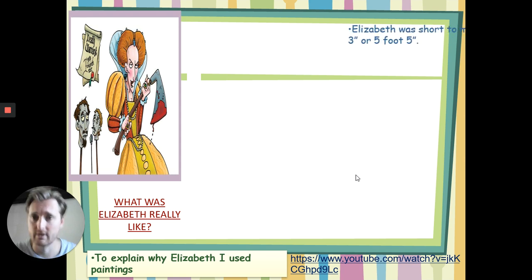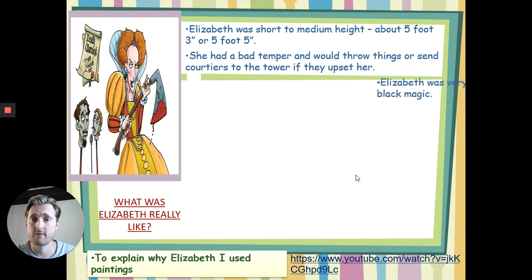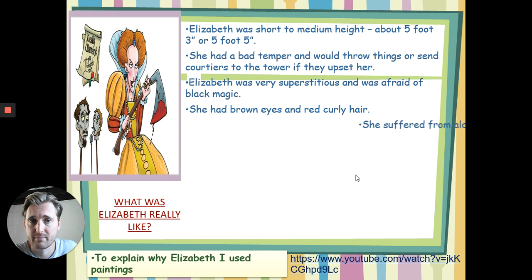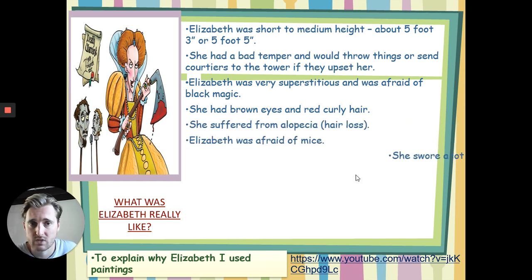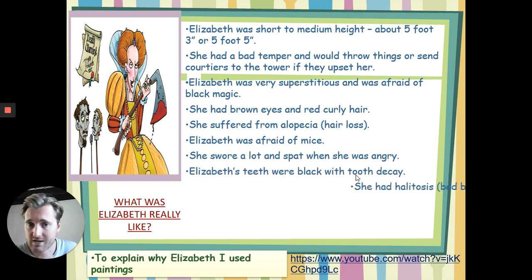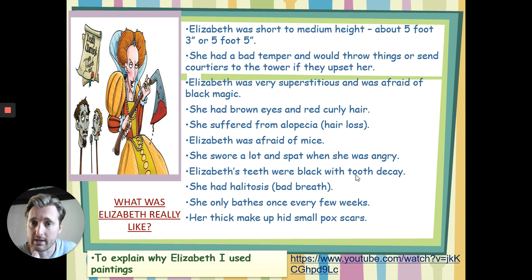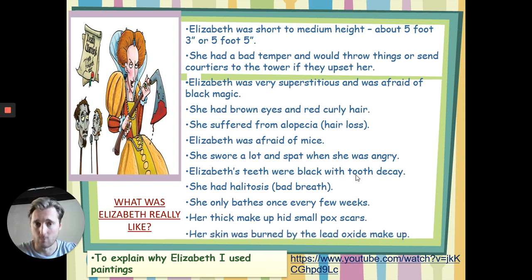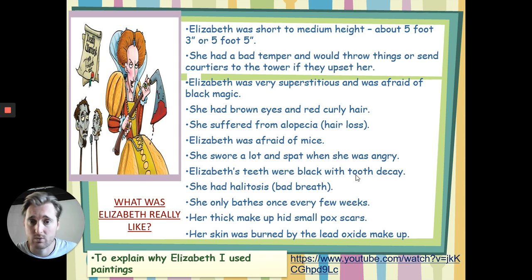So what was Elizabeth really like? Elizabeth was short — she was only about five foot three or five foot five; we don't have the exact figure. And apparently she had a bad temper and would throw her things, or send people to the Tower if they upset her. And she was very afraid of black magic. She had brown eyes and red curly hair. As she got older, though, her hair fell out and went grey, so often what you see is her wearing a wig in her older age because she did suffer from hair loss.